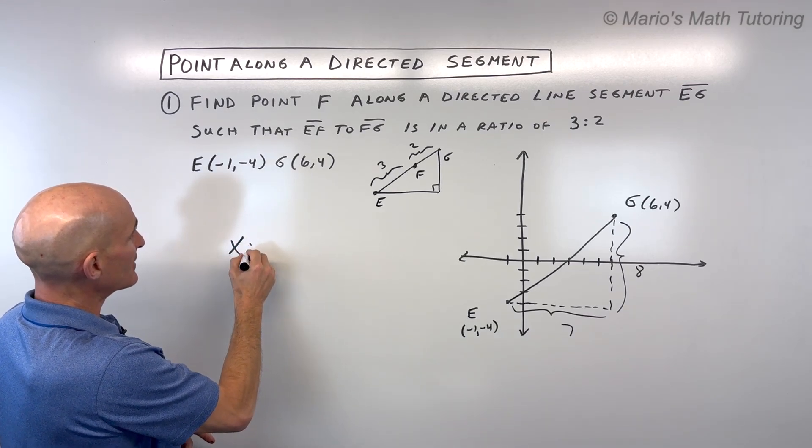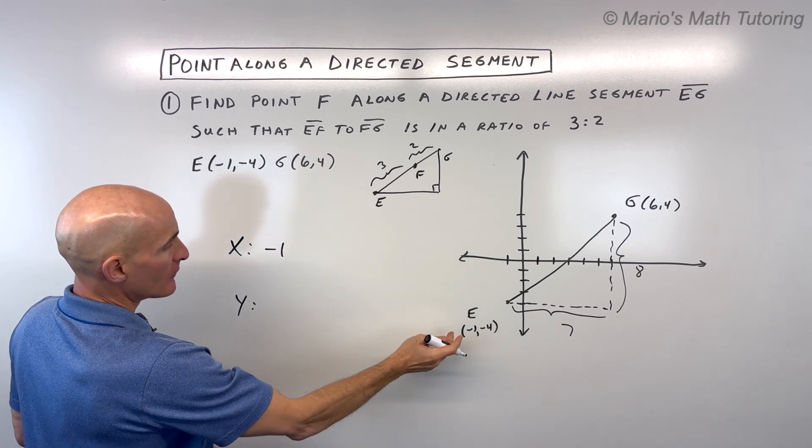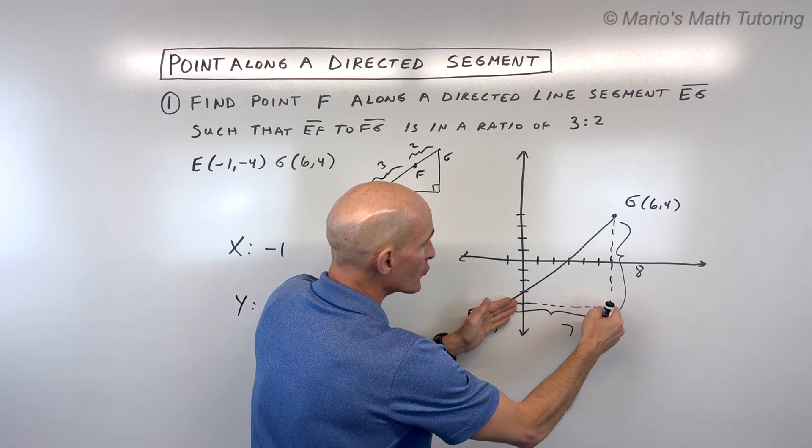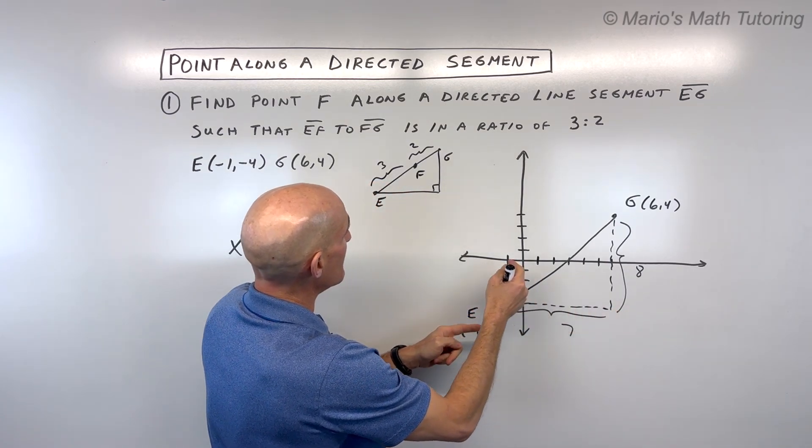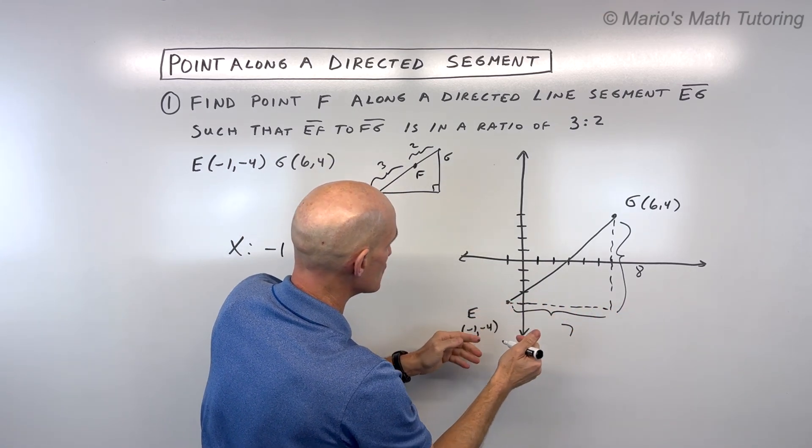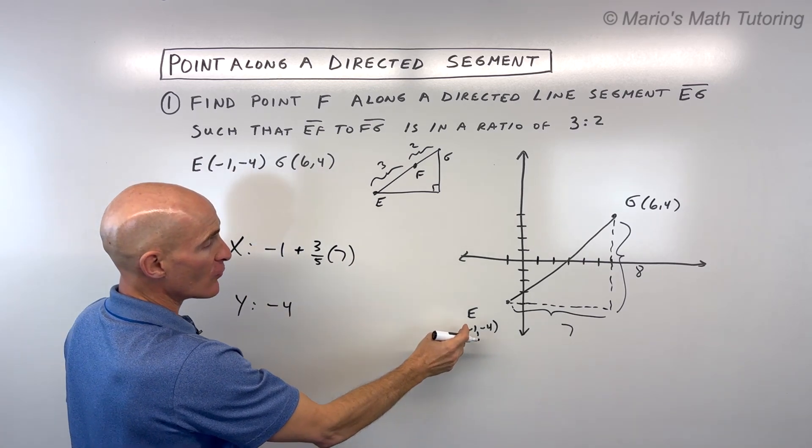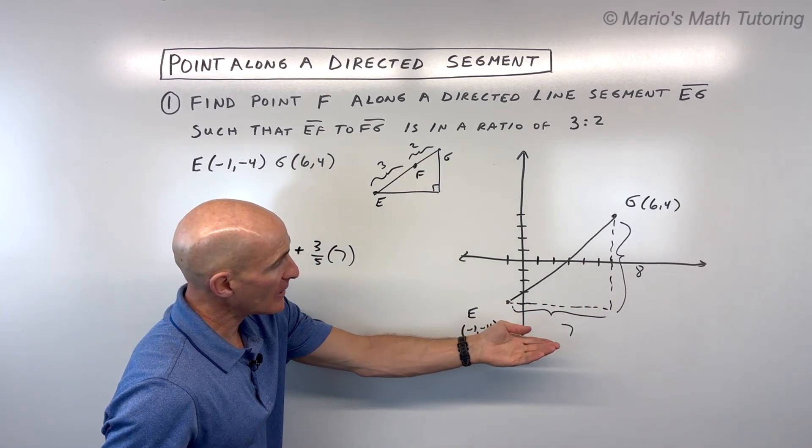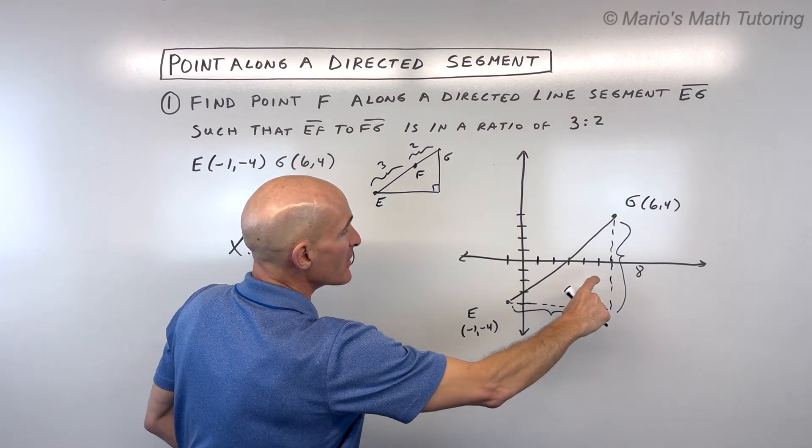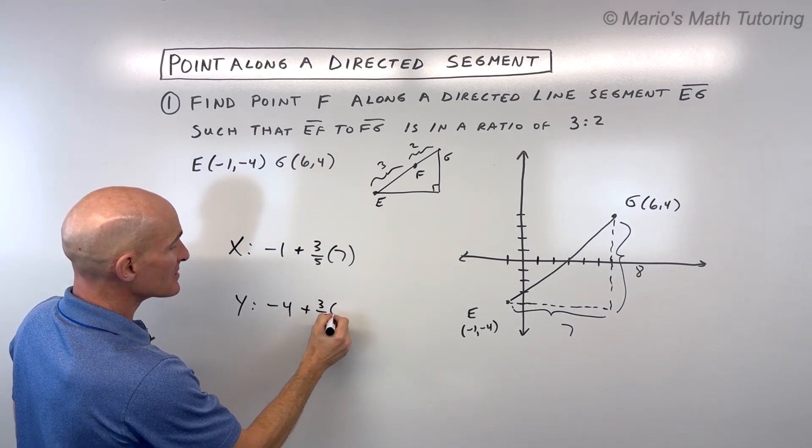So the way I like to set this up is I like to think of my x-coordinate and my y-coordinate. So for x, I'm starting at negative 1. For y, I'm starting at negative 4. But when I'm going in this horizontal direction, I'm not going 7 units. I'm actually going just three-fifths of this horizontal distance. So I'm saying let's add three-fifths of 7 to negative 1, to this x-coordinate. Then in the y-direction, we're not going this whole vertical distance of 8. We're just going up three-fifths of this distance. So it's going to be plus three-fifths of 8.